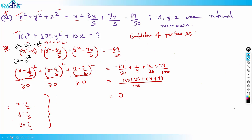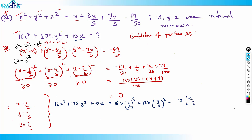Now I find the value of 16x³ + 125y² + 10z. Substituting: 16 × (1/2)³ + 125 × (4/5)² + 10 × (7/10) = 16 × 1/8 + 125 × 16/25 + 7 = 2 + 80 + 7 = 89. So the answer is 89. Great question!